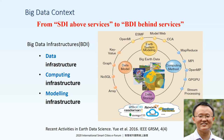We also have computing infrastructure. We use the traditional MPI for parallel computing, MPI GPU, stream processing, and various computing infrastructure. Also the modeling infrastructure. We have a modeling open modeling interface, an all-science modeling framework, a model web concept, and a component-based modeling framework. These various infrastructures are used in big data infrastructure.